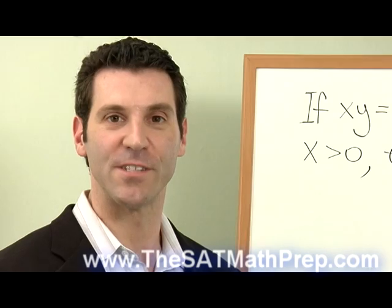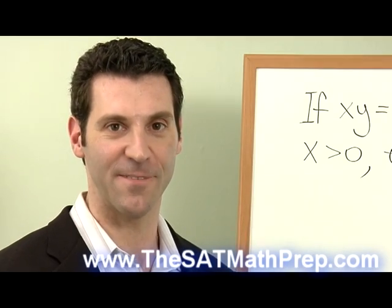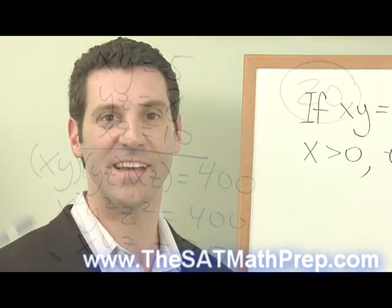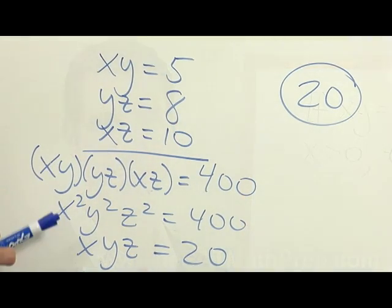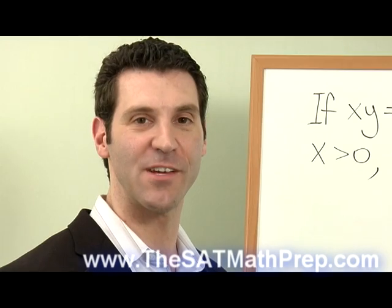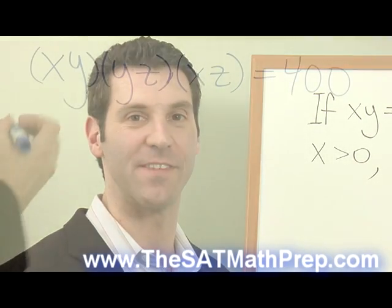For those students who are still having a little trouble understanding, here is a more detailed explanation of how we get from this step to this step. By associativity of multiplication, we can drop all of the parentheses.